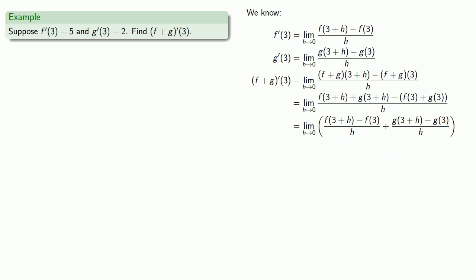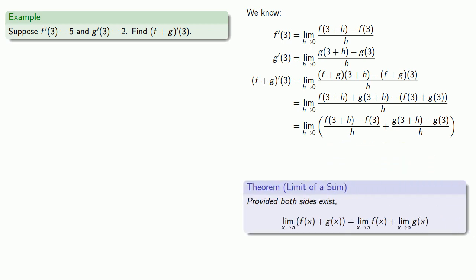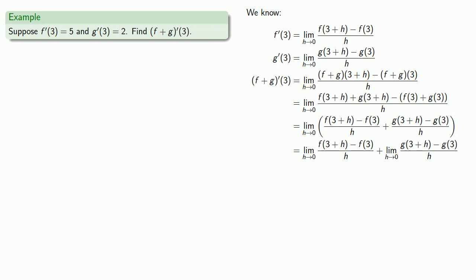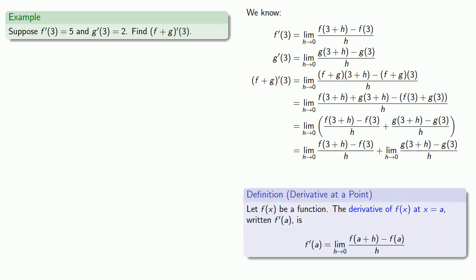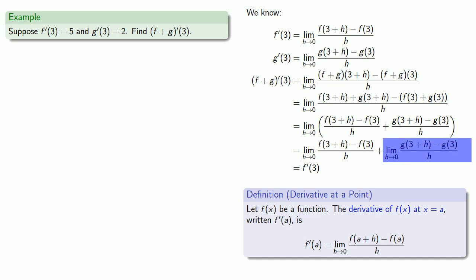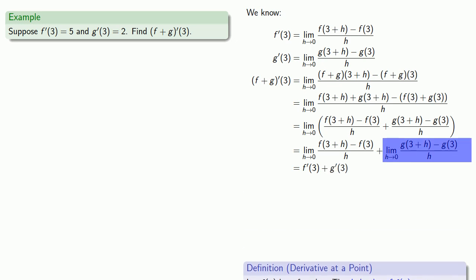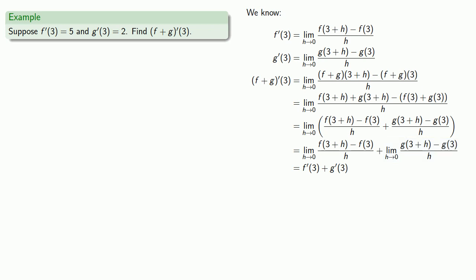Now I can rearrange these terms so that I have all the f terms in one fraction and all the g terms in the other. Because this is the limit of a sum, I can find its limit by finding the two limits and adding them together. Bringing back our definition of the derivative, the first term is the limit form of f'(3), and the second is the limit form of g'(3). So what we have is f'(3) + g'(3), and since I already know those values, that equals 7, which is the value of (f+g)'(3).